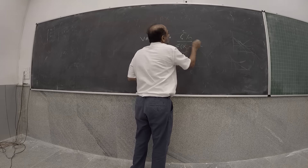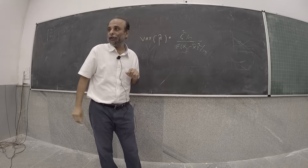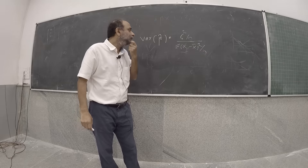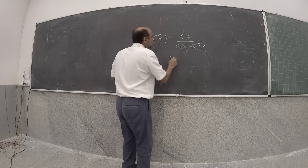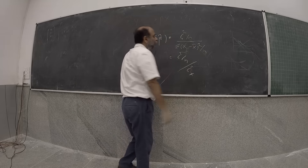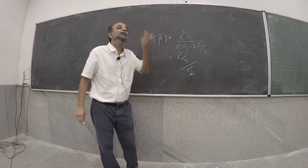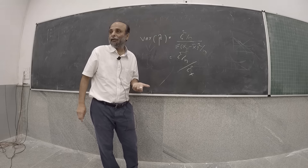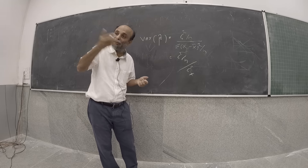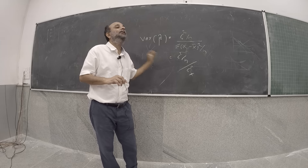We also saw that if you divide the numerator and denominator by n, this becomes a more insightful quantity. The numerator becomes sigma squared upon n, and the denominator can be written as sigma squared upon n, divided by sigma squared x — where sigma squared x gives you the variability in x, and sigma squared gives you the variability in the error term. n is the number of observations.